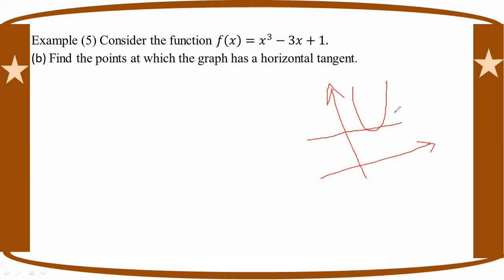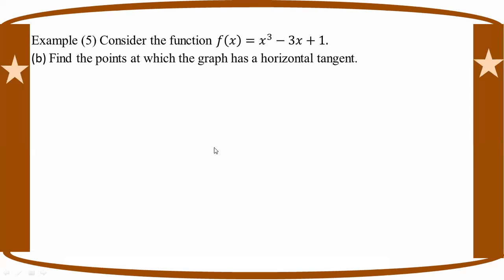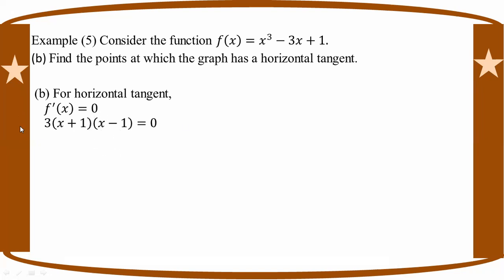For a horizontal tangent, the gradient is zero. The gradient equals zero means F prime equals 0. F prime equals 3 times A plus 1 times A minus 1 equals 0, giving A equals minus 1 and A equals 1.